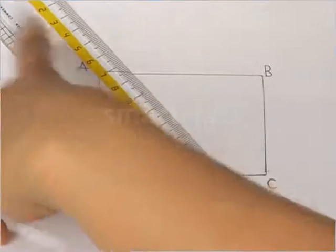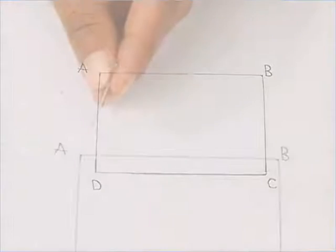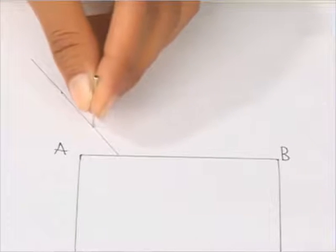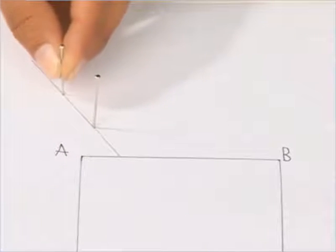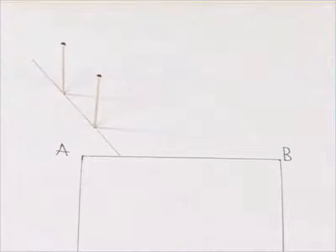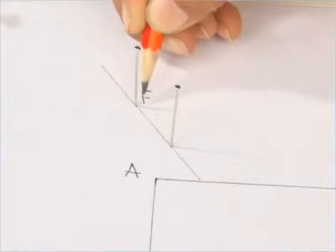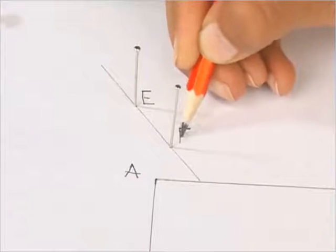Draw a line inclined to AB. Fix two pins on this line vertically such that the line joining the pins is inclined to the edge AB. Name the positions of the pins as E and F.